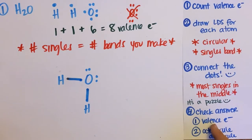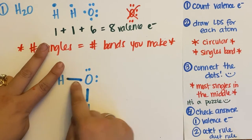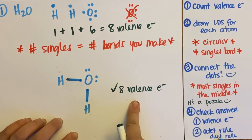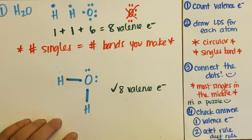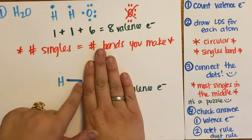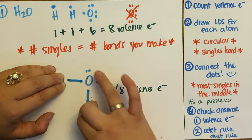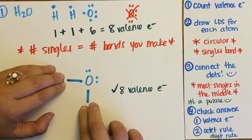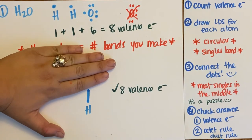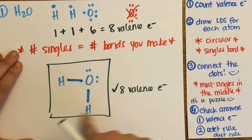Check the answer: I should have eight valence electrons total. A bond represents two, so counting up: two, three, four, five, six, eight — hooray, I started with eight and ended with eight. Check octet and duet rules: this hydrogen has one, two electrons — duet rule satisfied. Oxygen has two, four, six, eight valence electrons — octet rule satisfied. This hydrogen also has two — duet rule satisfied. This is the correct covalent molecular structure for water.